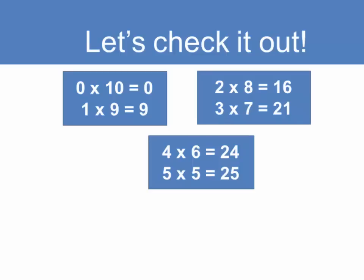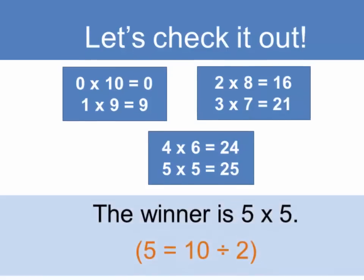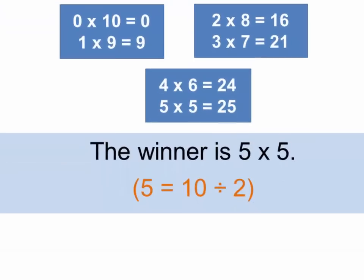Can we do any other combinations of these numbers that will lead to a product bigger than 25? And the answer is no we cannot. So the winner is 5 times 5, and notice that that winning number is simply 10 divided by 2.